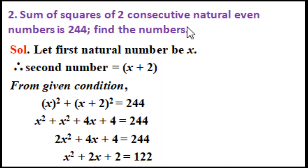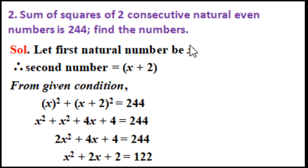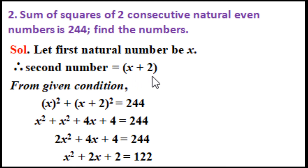Problem 2: The sum of squares of two consecutive natural even numbers is 244. Find the numbers. Natural numbers start from 1, 2, 3, 4 and are infinite. Even numbers are multiples of 2. Let the first even natural number be x, therefore the second number is x plus 2, since we need consecutive even numbers.